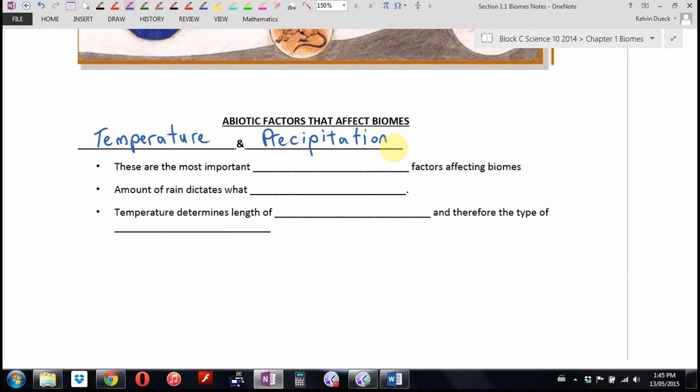So I should just say how much moisture and how hot it is. These are the most important, or new word, abiotic factors that affect biomes.